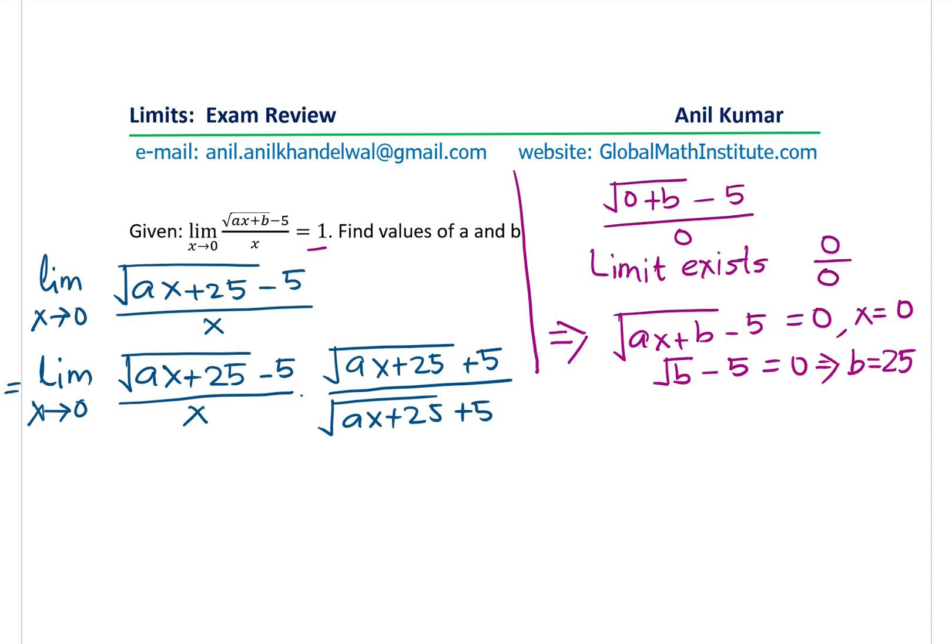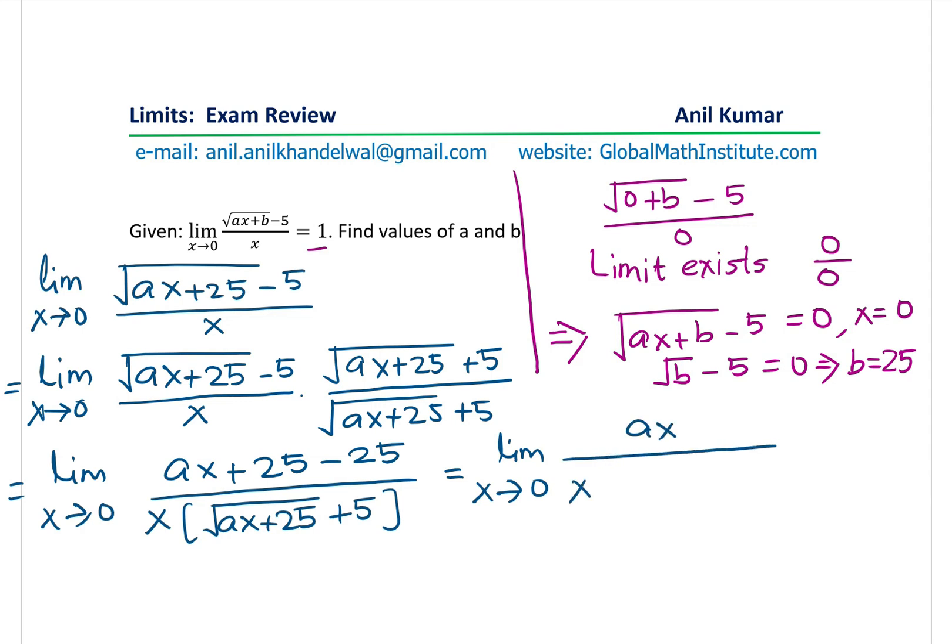So rationalizing, we get the expression in the numerator as square root of ax plus 25 minus 25 over x times square root of ax plus 25 plus 5. Now this could be simplified. So we have limit x approaches 0. So the numerator is now ax and the denominator is x times square root of ax plus 25 plus 5.